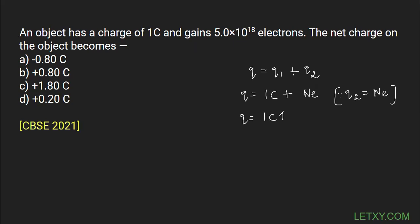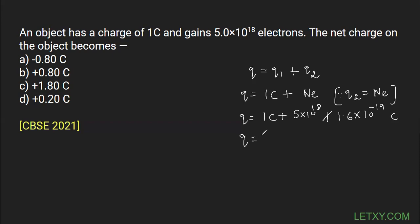So Q2 equals 1 coulomb plus N, which is given as 5 into 10 raised to the power 18, multiplied by e — the elementary charge on one electron — which is 1.6 into 10 raised to the power minus 19 coulombs.